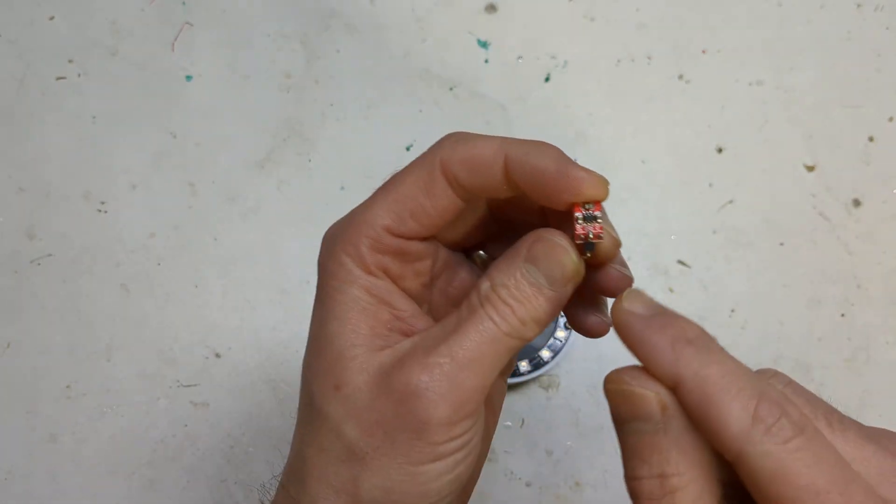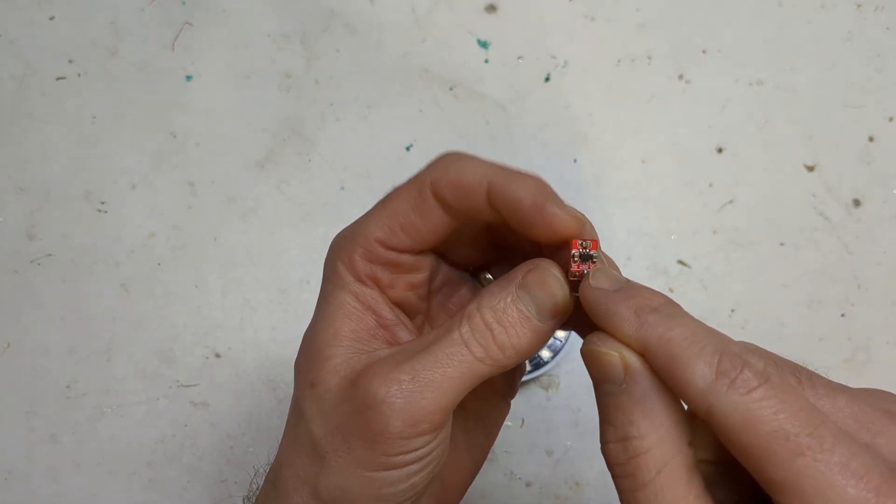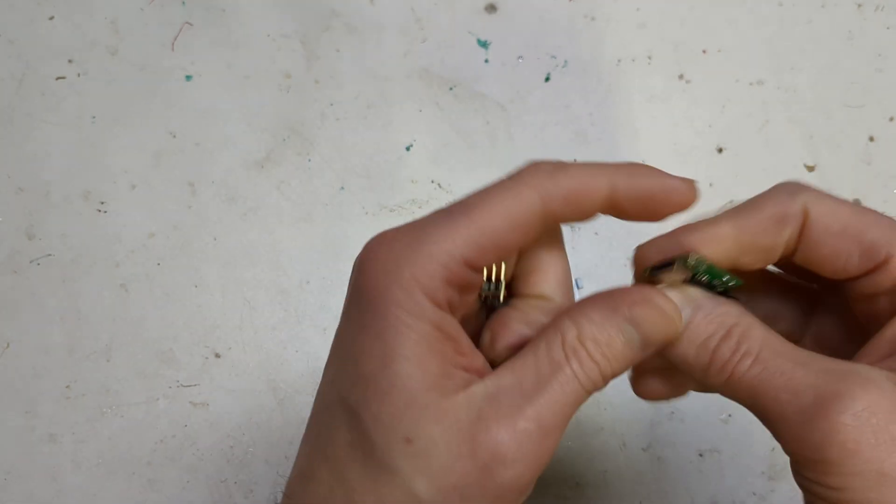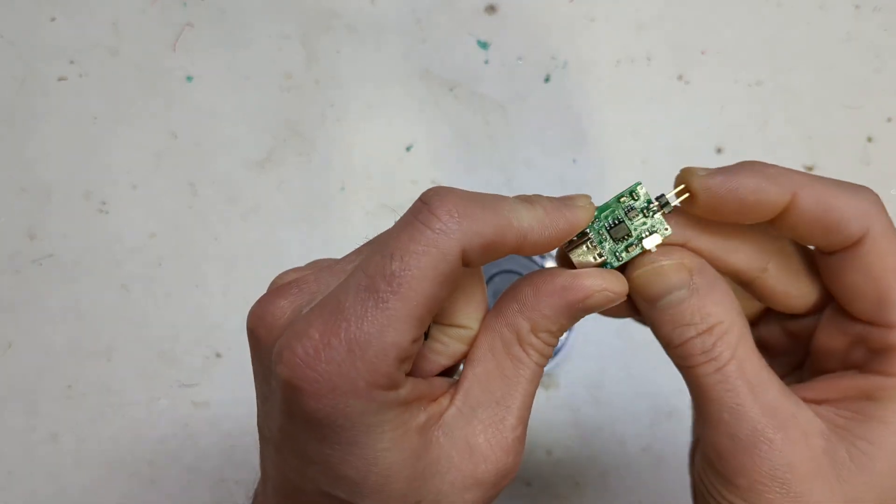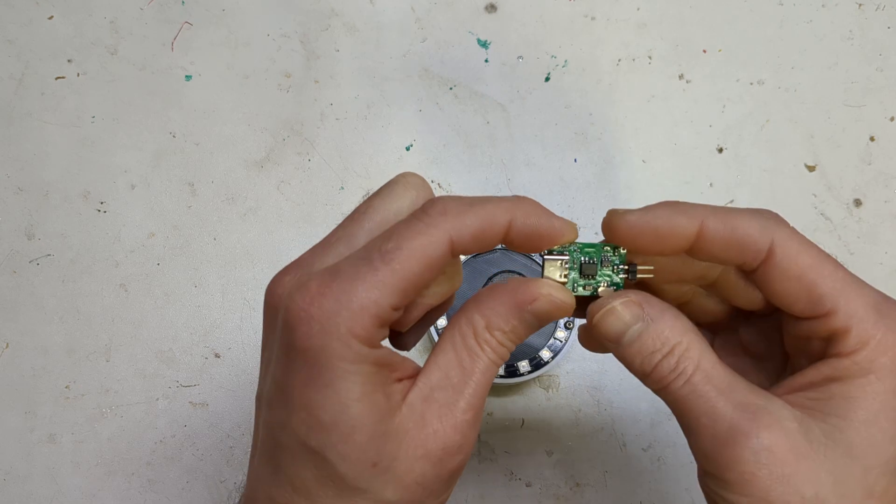And then interestingly enough, I found this schematic online, which I'll link in the blog post. But I didn't realize that it's actually, there's like an enable pin on this. And that's what I've linked up to this switch. So you can actually switch it on and off. So it won't actually give out power all the time, which is good.